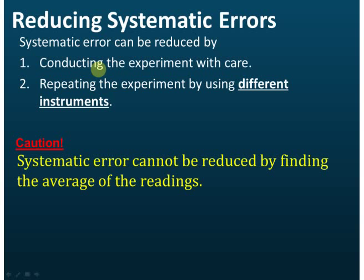Another way to reduce systematic error is repeating the experiment using different instruments, because the instrument you use may be incorrectly calibrated. If you use another instrument and find that the reading is different, you will know that one of them may have incorrect calibration.